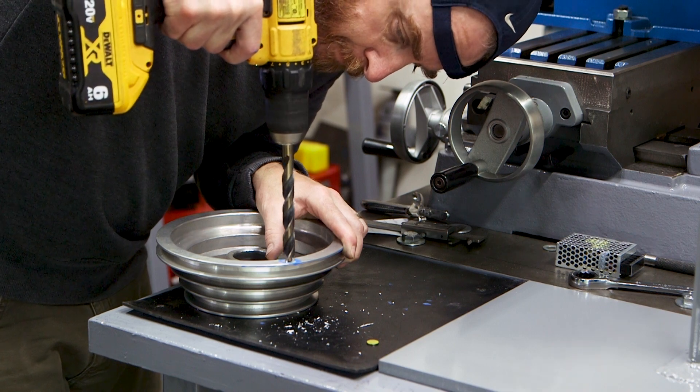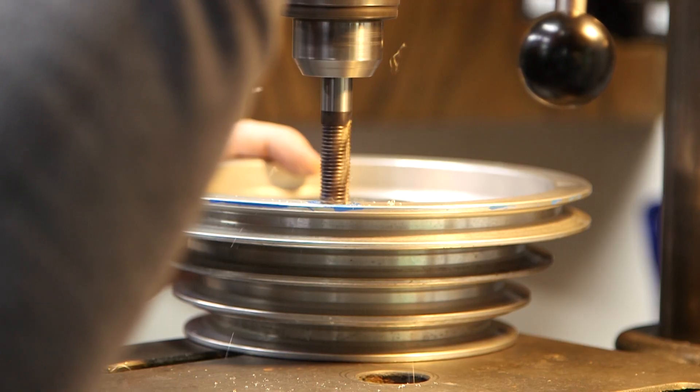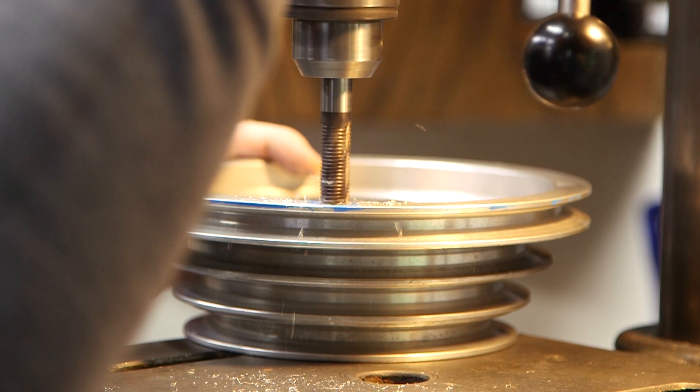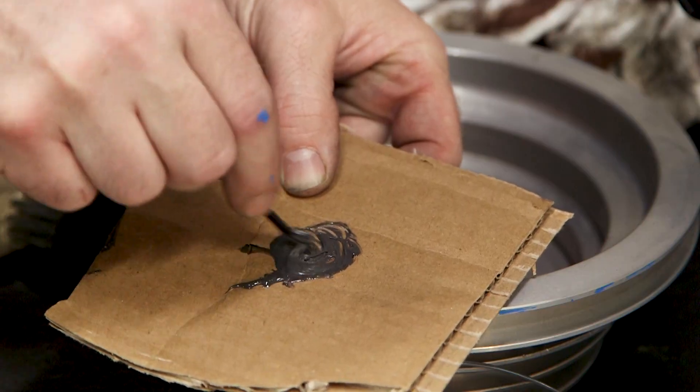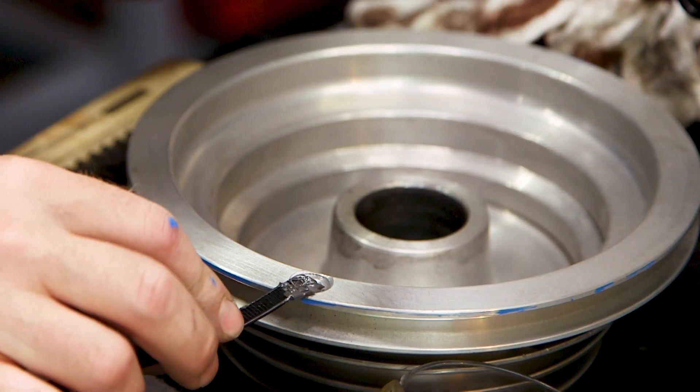The tachometer uses a hall effect sensor and a magnet to measure speed. I drilled a divot and then cut a hole with a half inch end mill to give the magnet somewhere to sit and then I epoxied it in place.